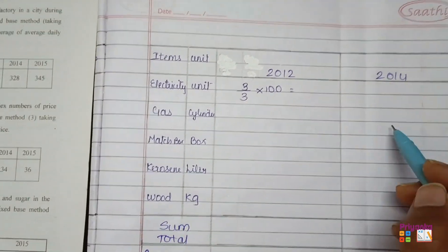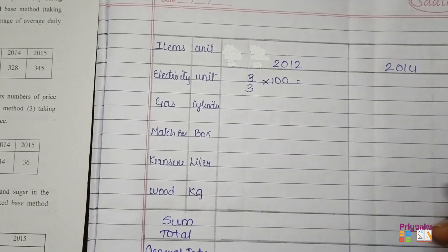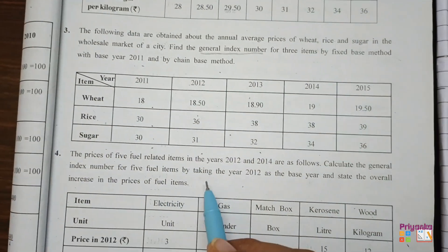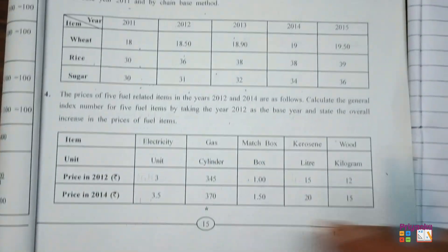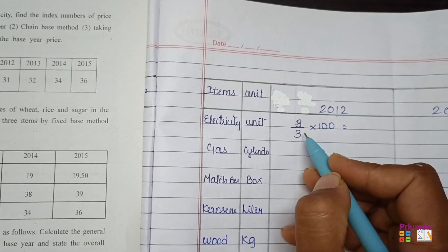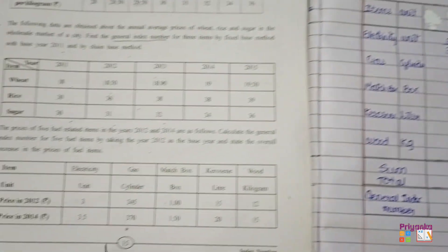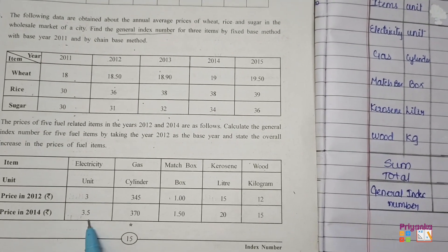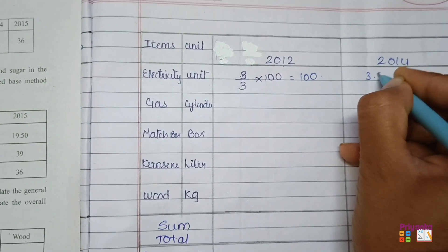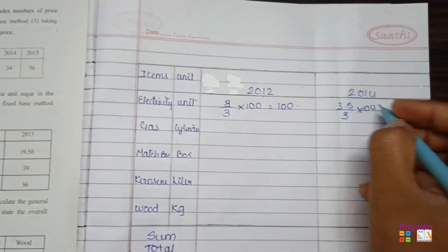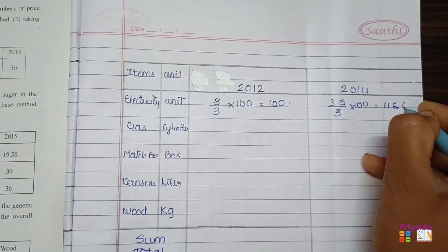Based on the information, we make two columns for 2012 and 2014. Since 2012 is the base year, the first item — electricity — has a 2012 price of 3. So 3 divided by 3 multiplied by 100 gives 100. For 2014, electricity is 3.5 divided by the base year value of 3, multiplied by 100, giving 116.67.